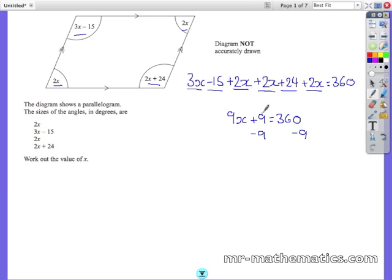To work out what x is, we'll divide both sides by 9, so x will equal 39.